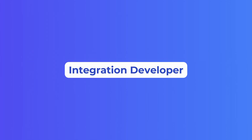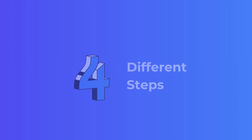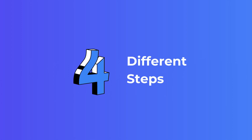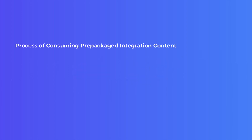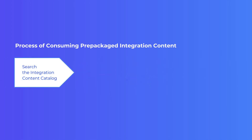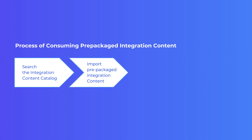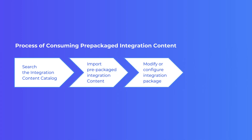As an integration developer, when you are planning to consume prepackaged integration content in SAP CPI, you need to follow four different steps. One is: Search the integration catalog. Two: Import the integration content. Three: Configure or modify the integration content. Four: Deploy the integration content.